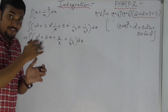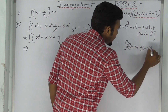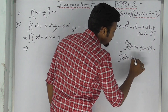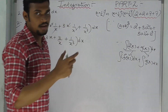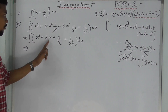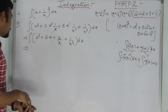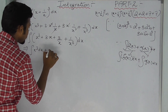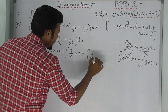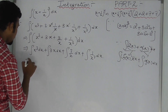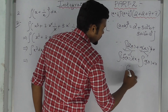Now we apply integration. Using the formula integral [f(x) + g(x)] dx = integral f(x) dx + integral g(x) dx, we separate this into three terms: integral x³ dx plus integral 3x dx plus integral 3/x dx plus integral 1/x³ dx.